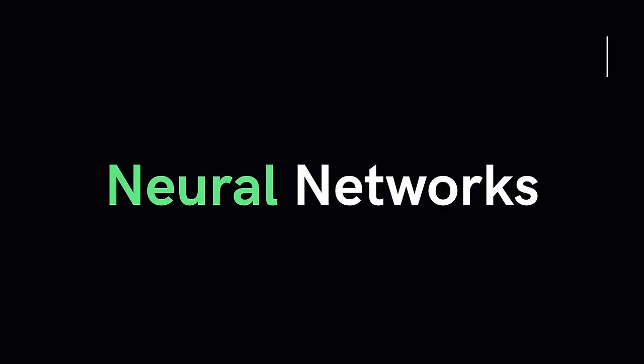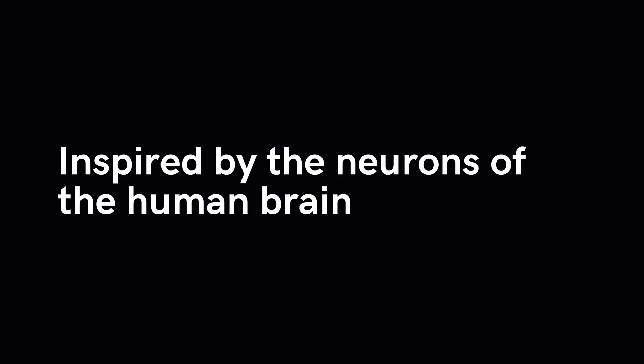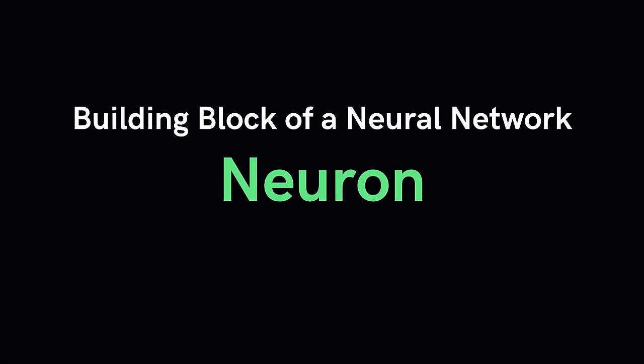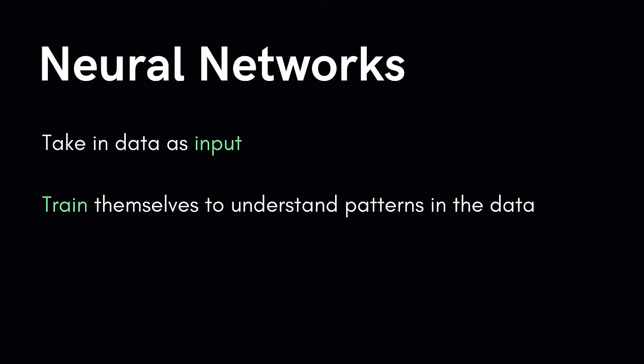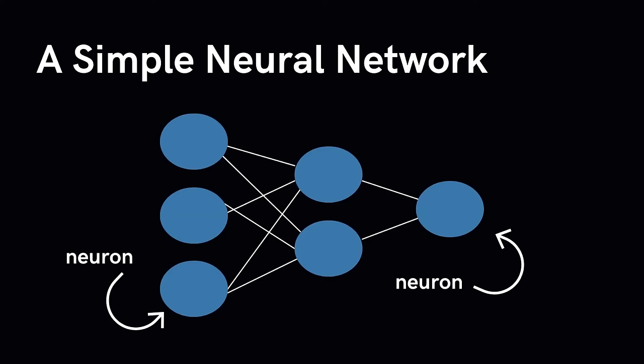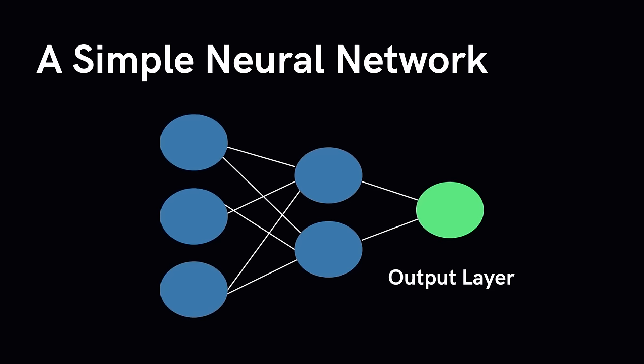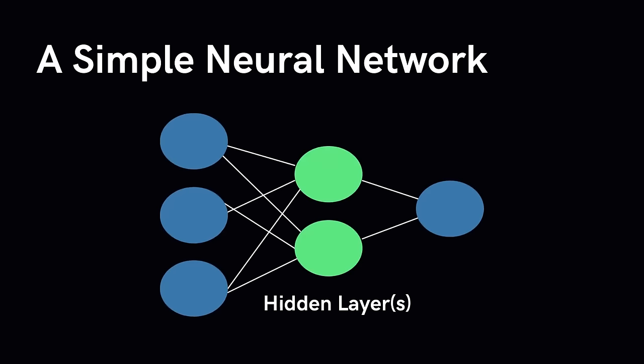Deep learning models refer to the training of neural networks. Neural networks form the basis of deep learning — a subfield of machine learning where algorithms are inspired by the structure of the human brain. Just like neurons make up the brain, the fundamental building block of a neural network is also a neuron. Neural networks take in data, train themselves to recognize patterns, and predict outputs for new similar data. Information propagates through three central components: the input layer, the output layer, and several hidden layers between the two.